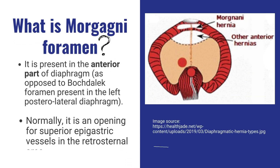What is Morgani foramen? It is present in the anterior part of the diaphragm, in comparison to Bochdalek foramen, which is present in the left posterolateral diaphragm. Normally, it is an opening for superior epigastric vessels in the retrosternal area.